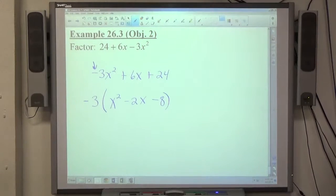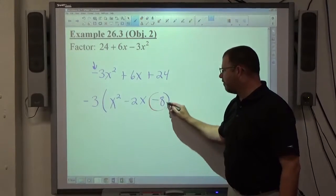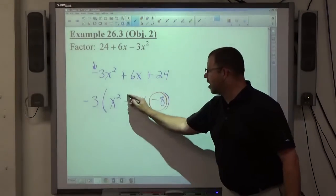So 3 was necessary, minus was necessary to change the sign so x² is positive. Once x² is positive, I want factors of that number whose sum is that number.